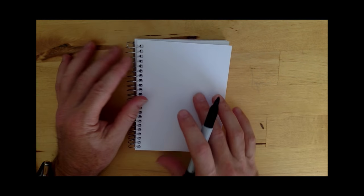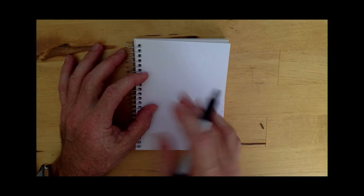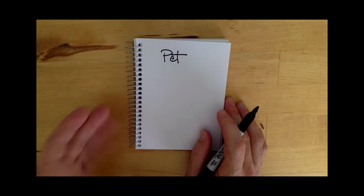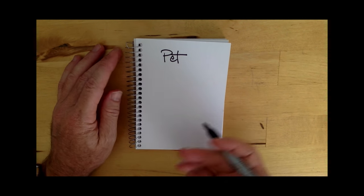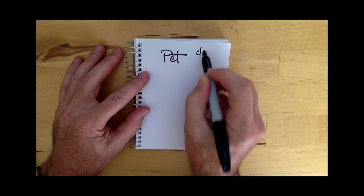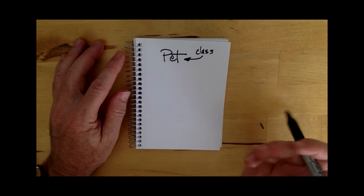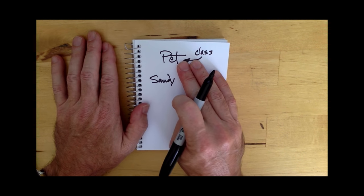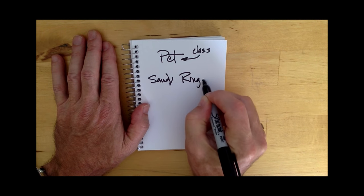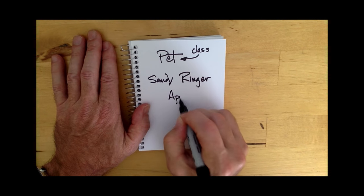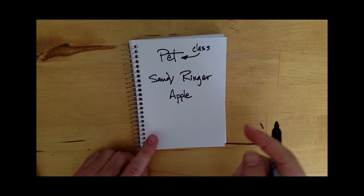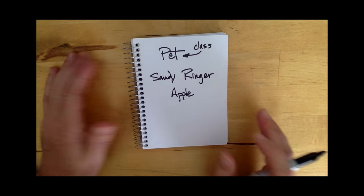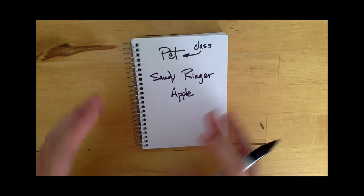Objects are organized into classes, which can be almost anything you can imagine — usually some sort of noun. A programmer might provide a pet class, and I have pets in my life. I would then have instances, or actual objects, associated with that pet class. My dog Sandy would be an object belonging to the class pet, my snake Ringer would belong to the pet class, and my cat Apple belongs to the pet class. As a programmer, the pet class doesn't exist in Python by itself — I would have to write that class.